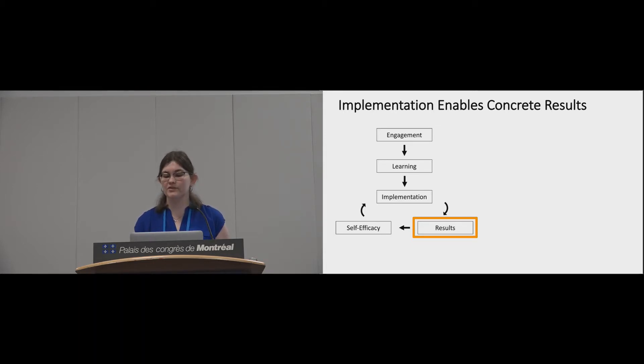As a result of implementing their DBT skills, participants reported actually seeing concrete results. In addition to the quantitative results I presented, participants described reduced distress, more positive relationships, and behavioral changes. For example, one participant said, when I actively used distress tolerance skills, I was able to reduce my SUDs or subjective units of distress scale score. So after using these skills, she was able to see this concrete improvement in her distress.